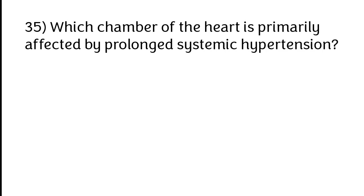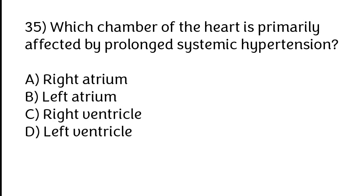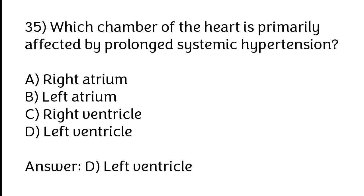Which chamber of the heart is primarily affected by prolonged systemic hypertension? Options: A) Right atrium, B) Left atrium, C) Right ventricle, D) Left ventricle. The correct answer is option D, left ventricle.